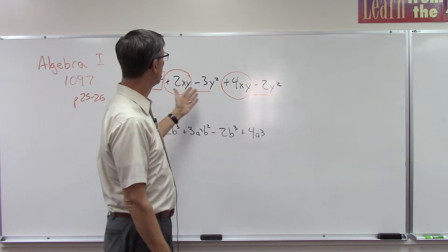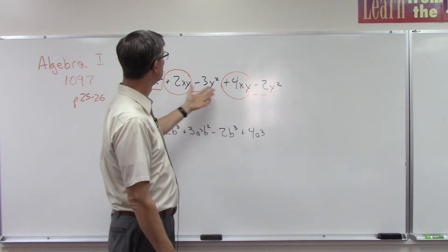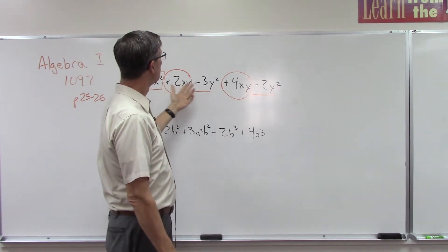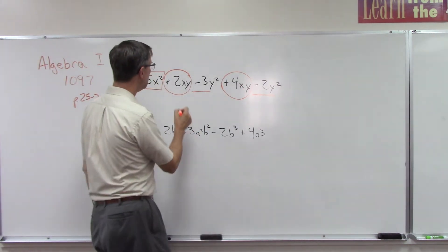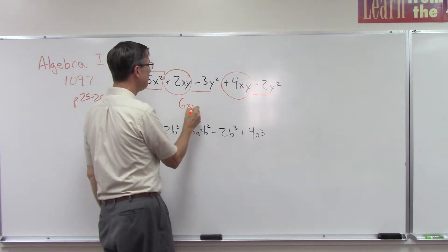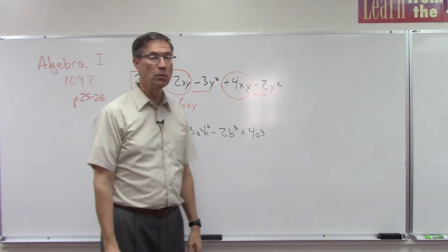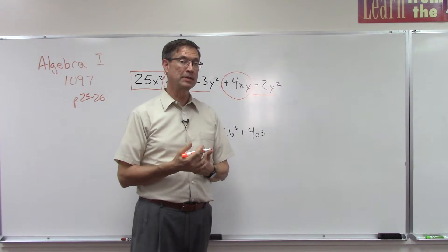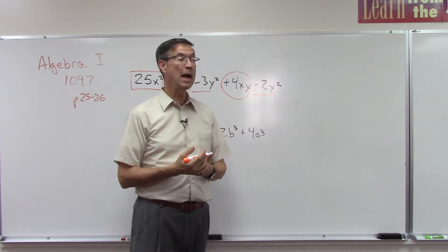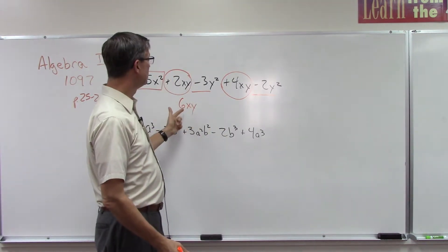We can do them in any order. Let's start with this: what's positive 2 plus positive 4? That's easy, right? 6. And then I just keep the xy - it does not become x²y². Those only change if I'm multiplying them. X times x is x², but if I'm adding, the only thing that changes is the coefficient, the numerical coefficient out front.